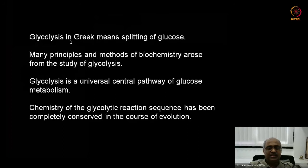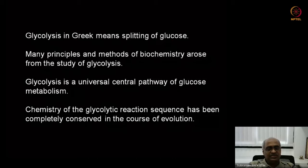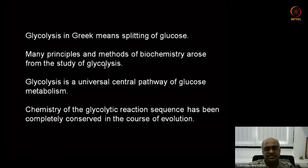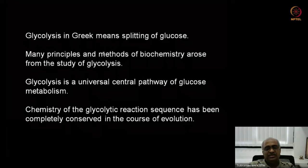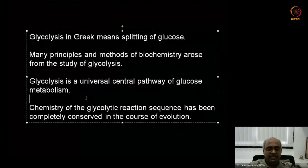Major principles and methods of biochemistry arose from the study of glycolysis — through trying to understand glycolysis, people discovered much about enzymes, enzyme kinetics, active sites, and reaction mechanisms. Glycolysis is a universal central pathway of glucose metabolism, conserved in multiple organisms. The chemistry is completely conserved: the way glucose becomes glucose-6-phosphate in E. coli is the same as in our body, conserved for about 3 billion years.